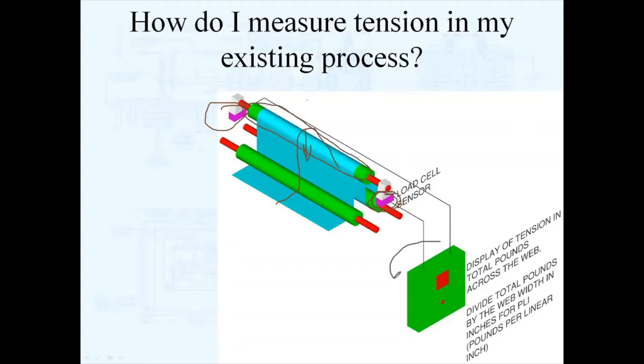Normally load cells can give you a readout as to how much tension is across that roller. Take the total tension and divide it by the web width, and that will tell you PLI, pounds per linear inch.